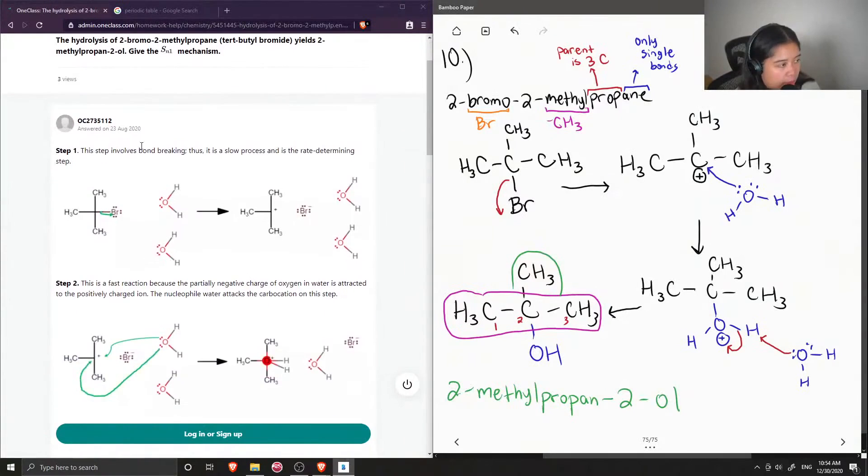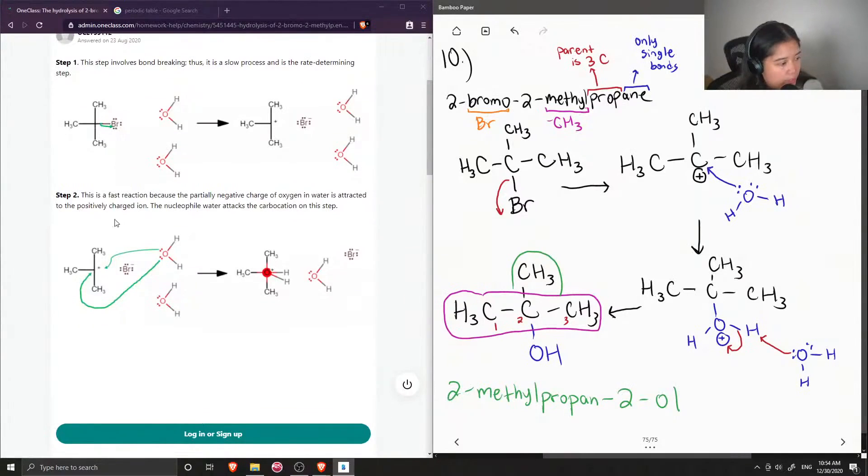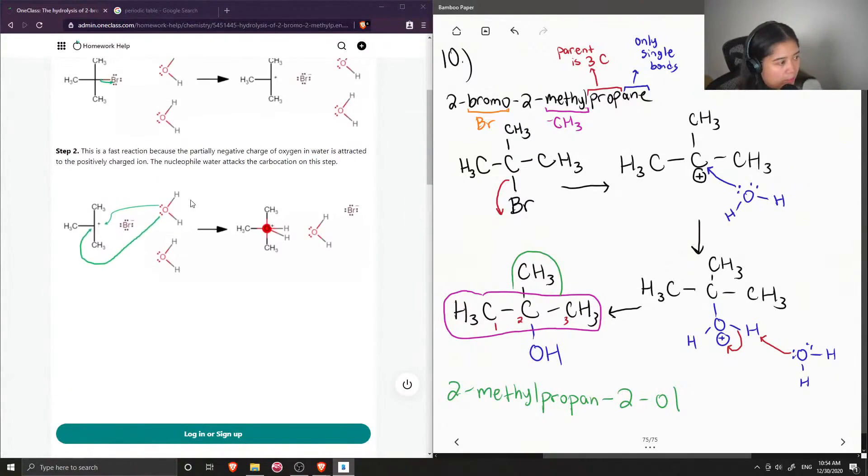Let's see what the tutor said. Step 1: this step involves bond breaking, thus it is a slow process and is the rate determining step. Okay, so they form the carbocation with the bromine group acting as the leaving group. Step 2: this is a fast reaction because the partially negative charge on oxygen in water is attracted to the positively charged ion. The nucleophile water attacks the carbocation in this step. So they show it attacking the positively charged bond.